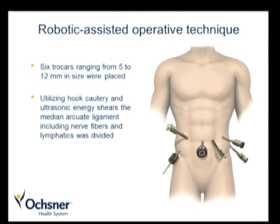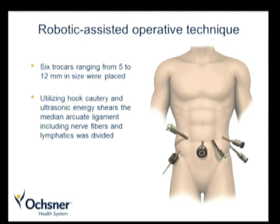In terms of the robotic-assisted technique, this utilized six trocars: a liver retractor trocar, three robotic arms, one robotic camera port, and an assistant port. The operation was performed in a similar fashion, entering the lesser sac and dividing the ligament using a combination of hook cautery and ultrasonic shears.